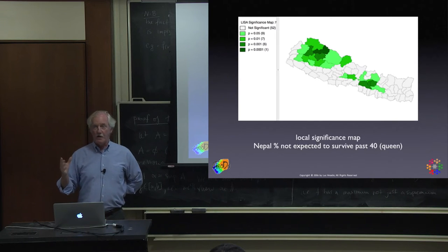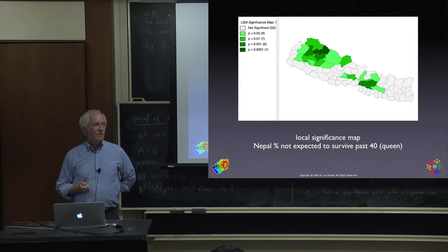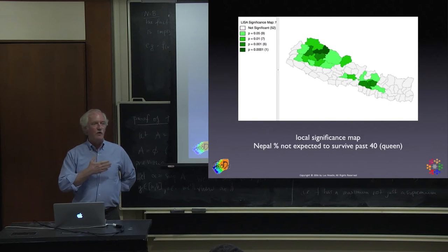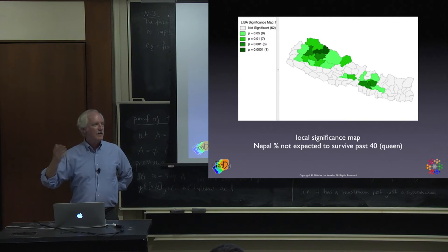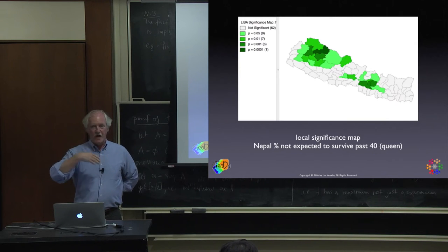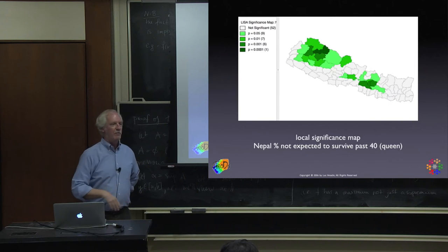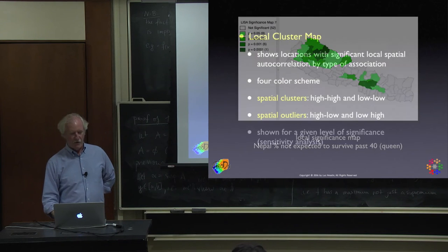There's one big problem with a significance-only map — it just shows what's significant, but you don't know whether it's positive or negative autocorrelation, or whether it's high-high or low-low. I never even look at the significance map alone. What I look at is the cluster map.